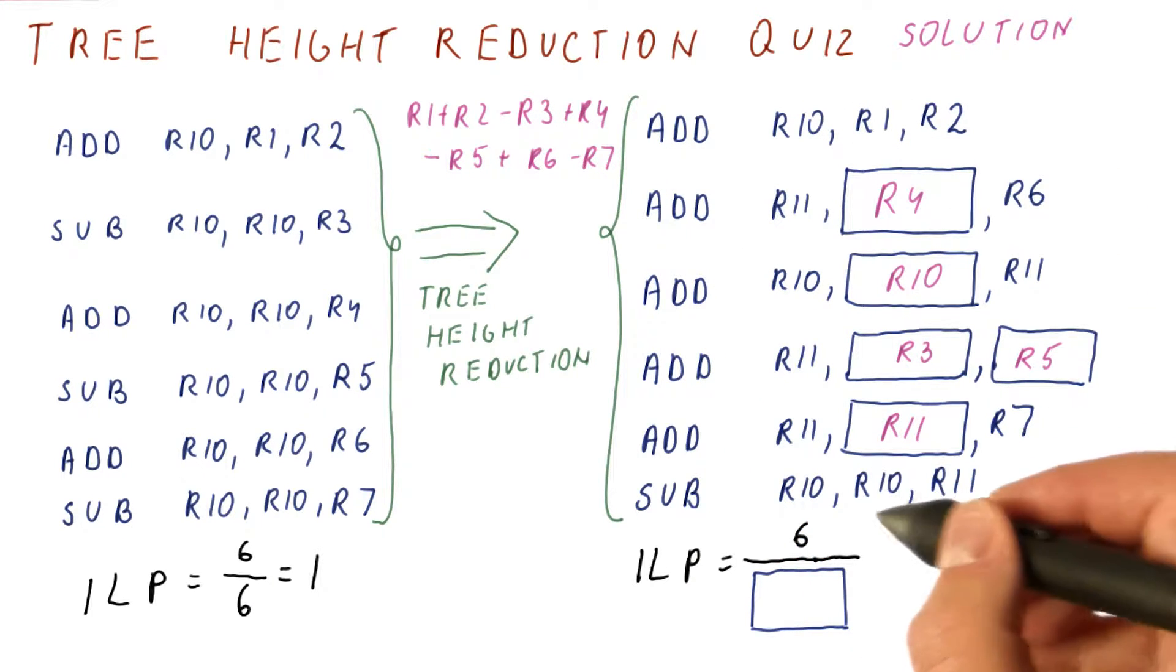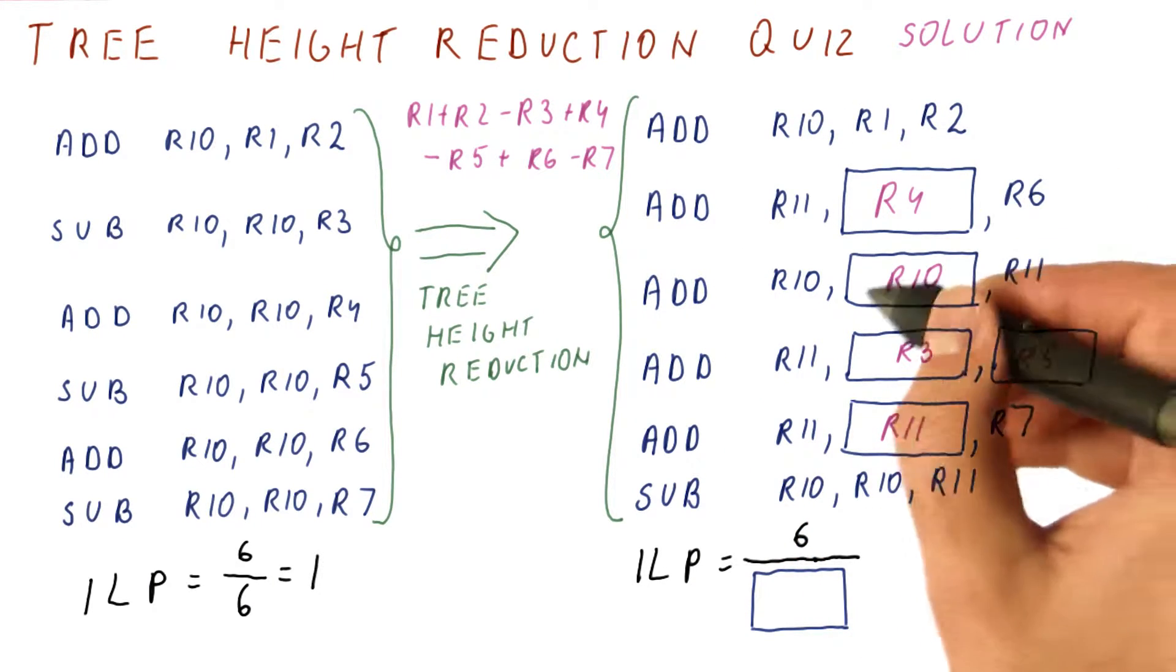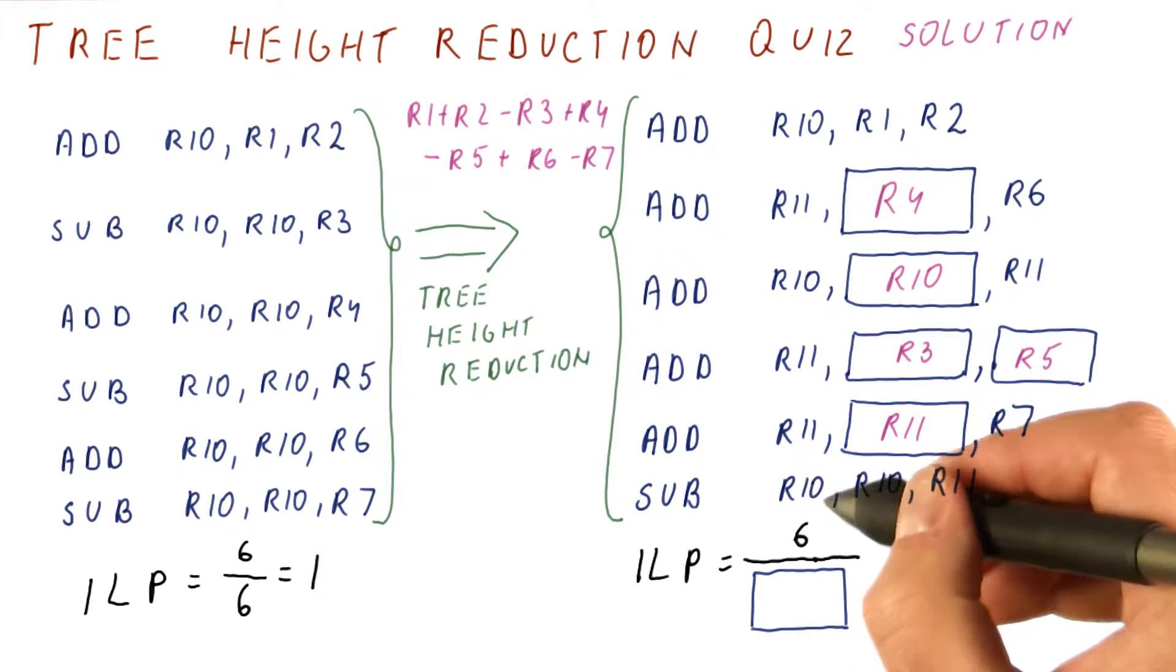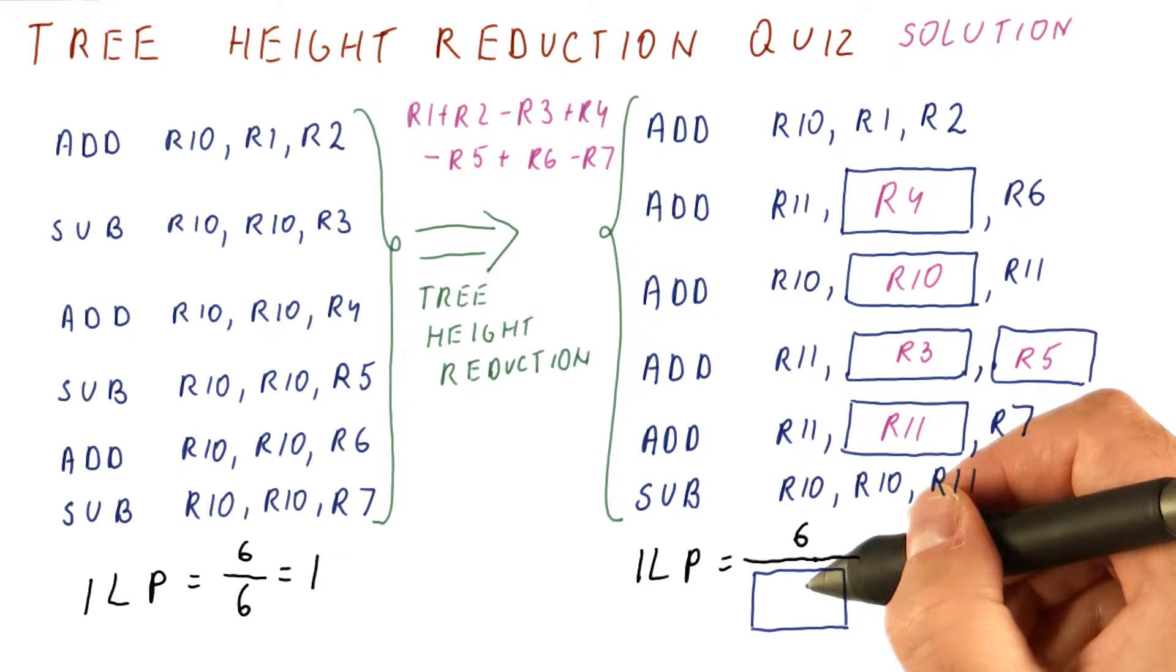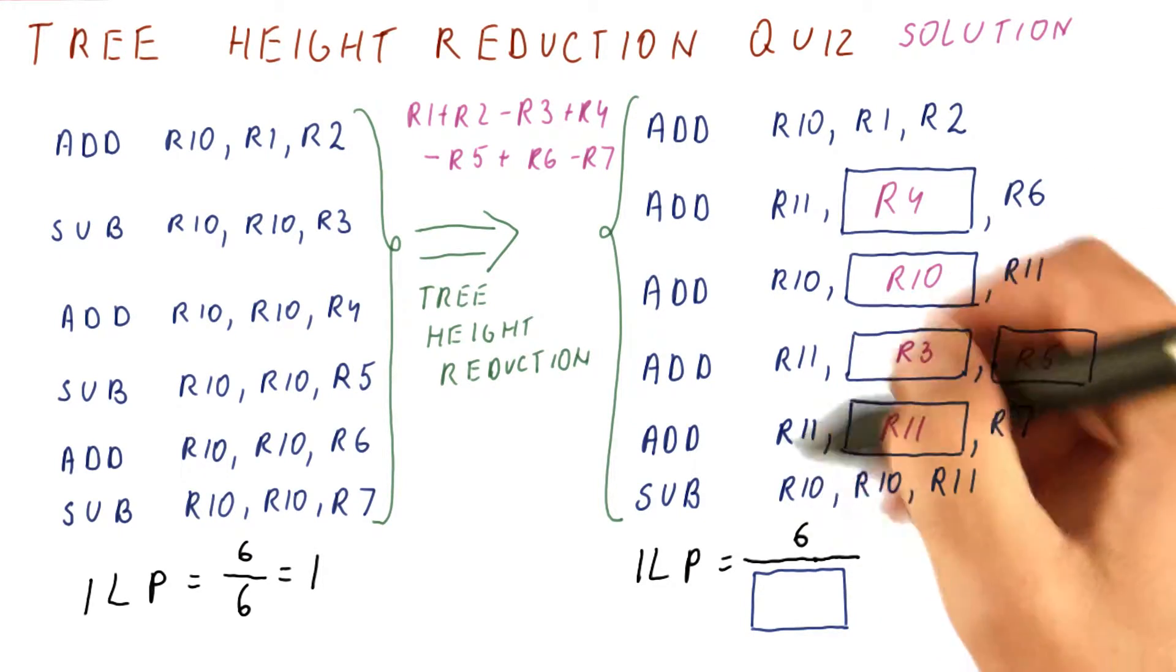And now we subtract that from R10 and we get the final answer in R10. Now let us see how many cycles we need to do this. To do that, let's draw the dependencies.